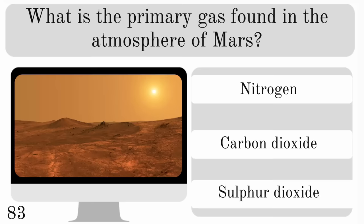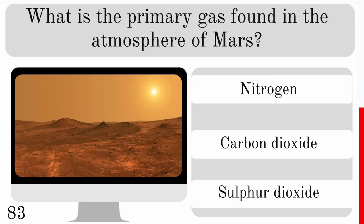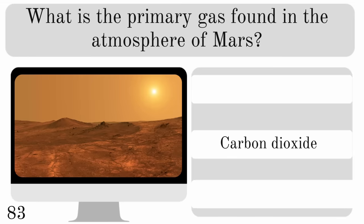What is the primary gas found in the atmosphere of Mars? Nitrogen, carbon dioxide or sulphur dioxide? The correct answer is carbon dioxide.